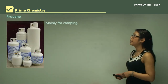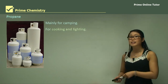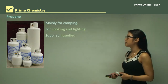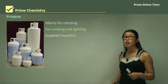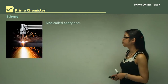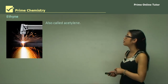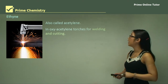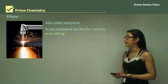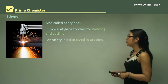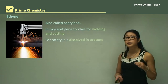Another fuel is propane, mainly used in camping for cooking and lighting. We burn it and it's supplied in a liquefied form, which is why we need specific types of canisters to hold it under pressure. Ethyne, also known as acetylene, is used in oxyacetylene torches for welding and cutting because it can produce very high heats. For safety it's dissolved in acetone, which is why it's supplied in canisters.